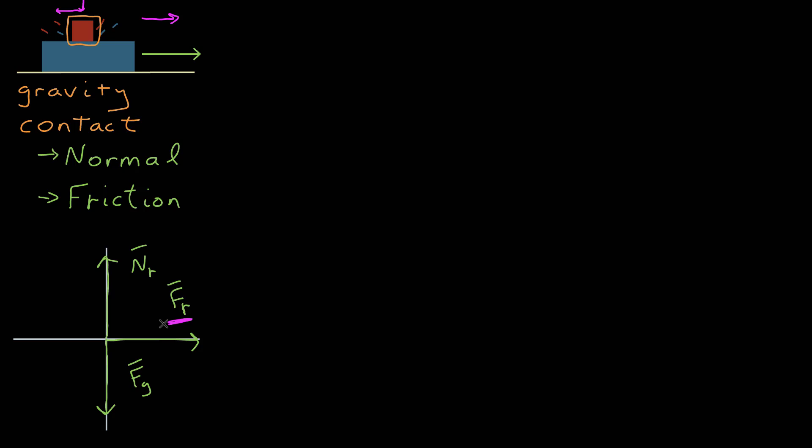In this example, red was moving to the right and being accelerated to the right relative to the ground. But it was moving to the left relative to the agent of the frictional force, which was the blue block. And it's that relative motion which is important to find the frictional force.